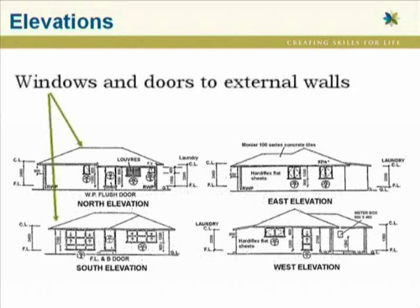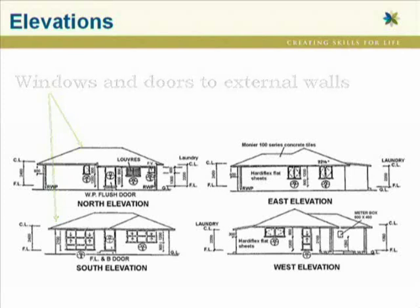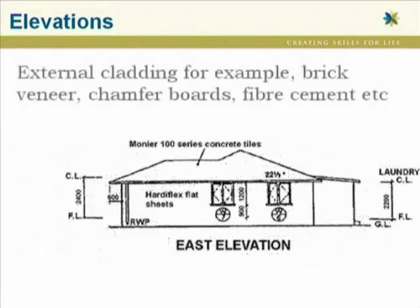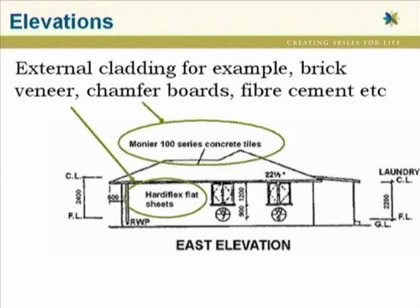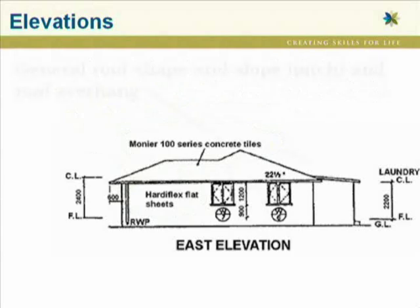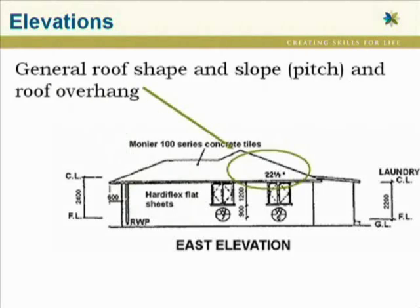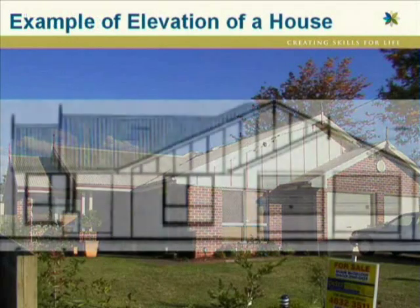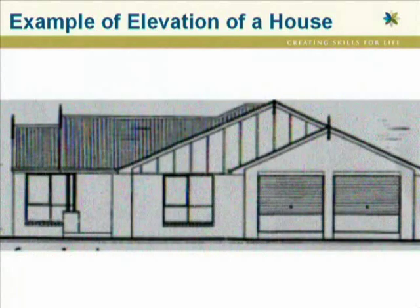We'll now look at some of the information you can expect to find on an elevation drawing. The elevation view provides information about the position of doors and windows to external walls, including the type of doors and windows required. Elevation views can also provide information on the types of covering used in a building — for example, whether it's chamfer board, weather board, or fibre cement sheeting used for cladding. The elevation can also provide information on roof covering, help establish the pitch of the roof, and the roof overhang. The elevation views can provide a foregleam of what the finished project will look like.